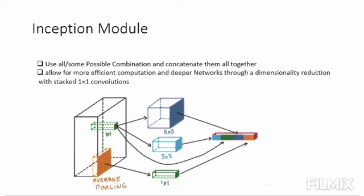The solution, in short, is to take multiple kernel filter sizes within the CNN rather than stacking them sequentially, ordering them to operate on the same level.